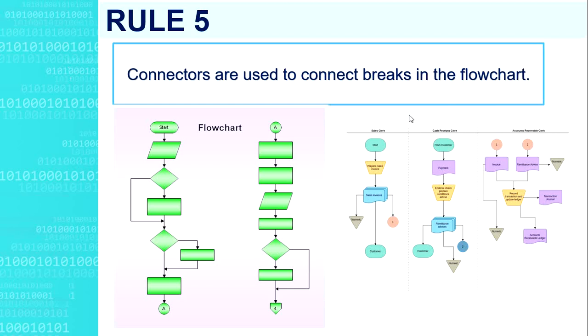Rule number five. Connectors are used to connect breaks in the flowchart. Examples are from one page to another page, from the bottom of the page to the top of the same page, or an upward flow of more than three symbols.